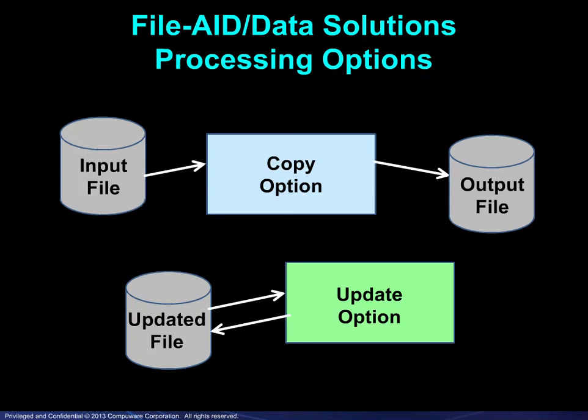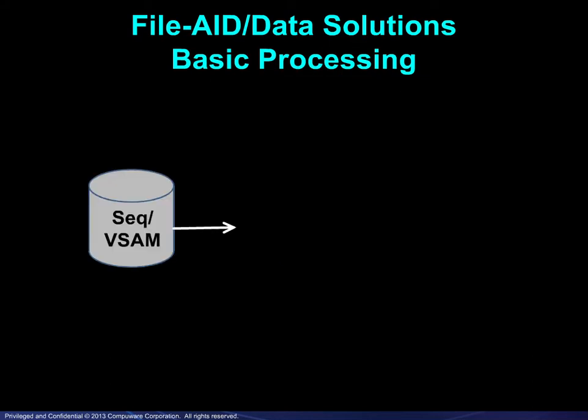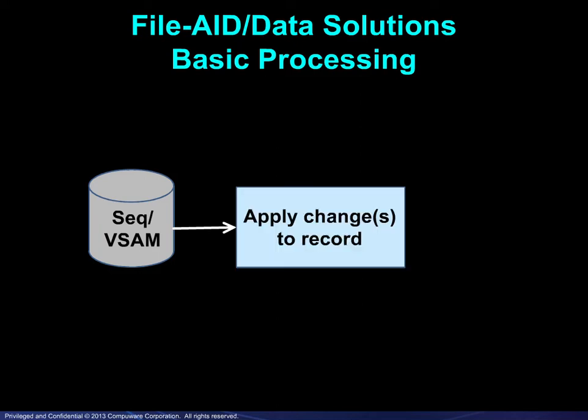Both of these options are available for online processing and for batch processing. Records are read one at a time from either a sequential or VSAM file. One or more changes are then applied to each qualifying record. The final step depends on whether copy or update was chosen.